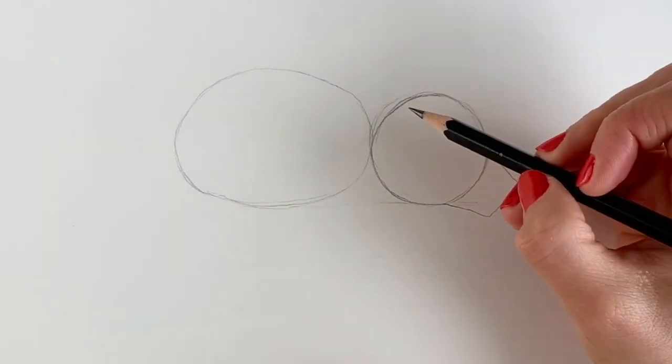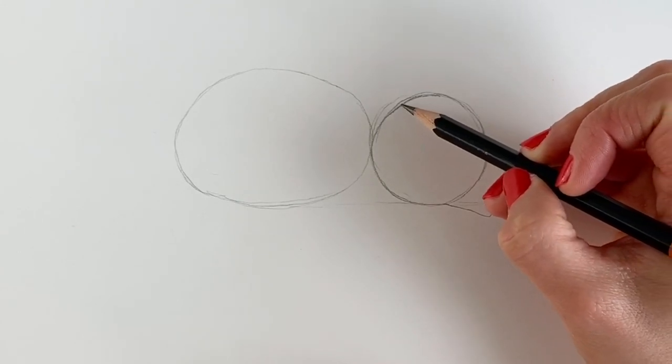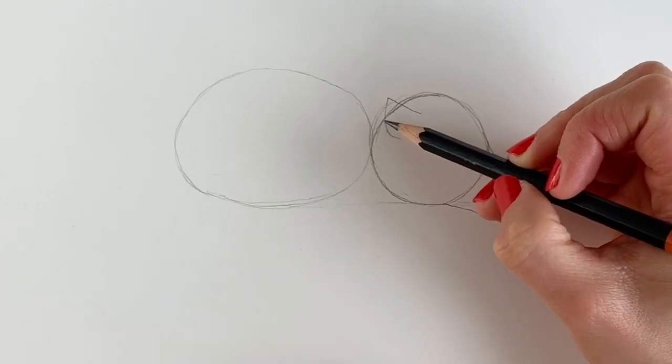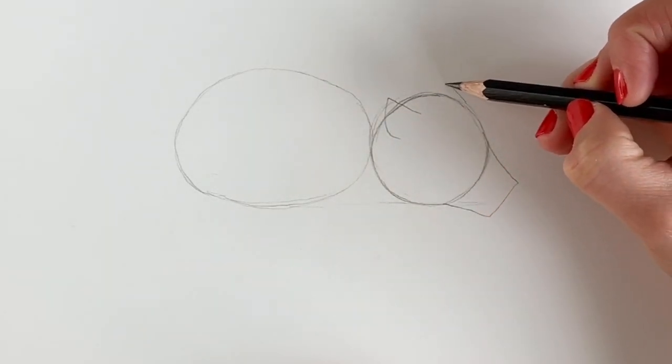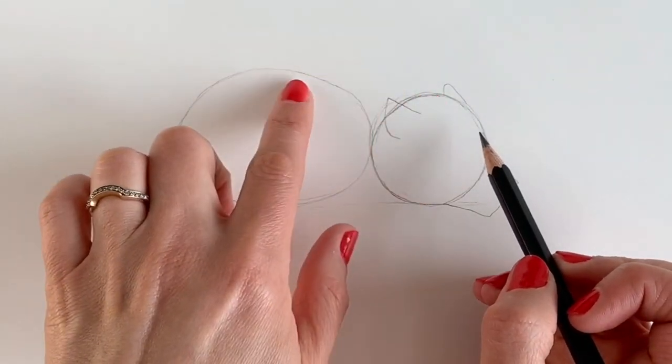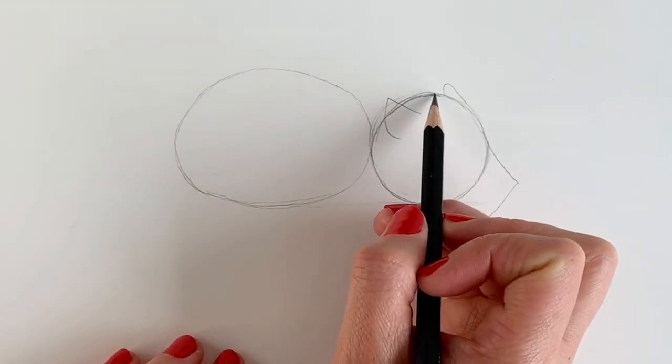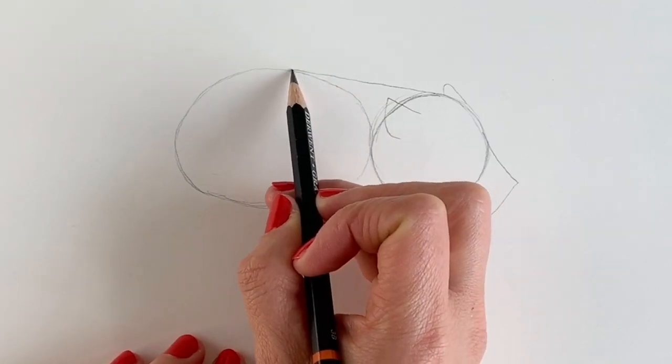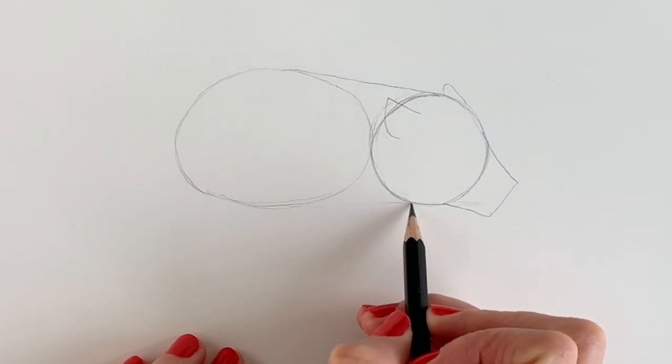Now we're going to do the ears. Just here, line coming up and it comes down. Try not to make a pig's ear out of it—sorry, dad joke. Then we're going to do the other ear just coming out from behind here. We're going to join up this circle to this oval shape. Remember, if I go too quickly, just hit pause and rewind if you need to. I'm also going to join up the circle and the oval shape down here as well.